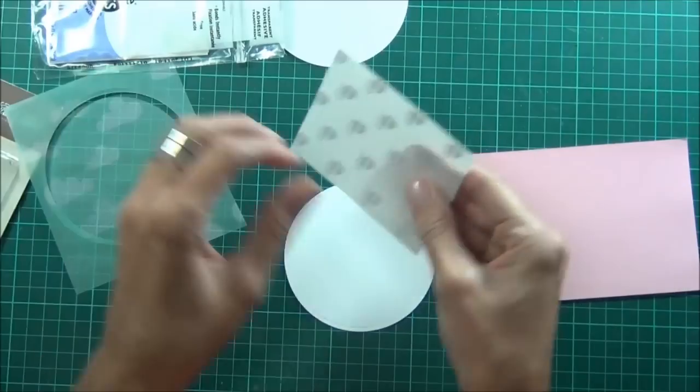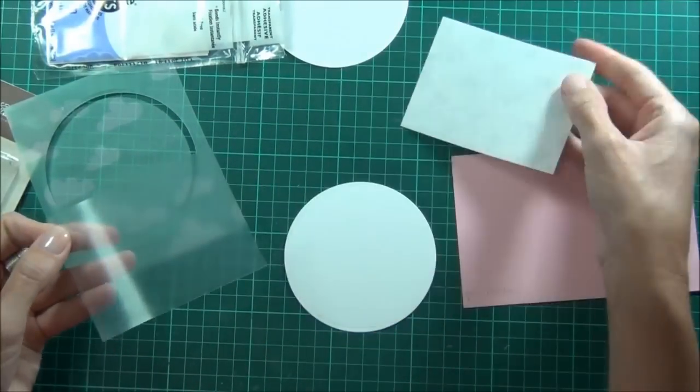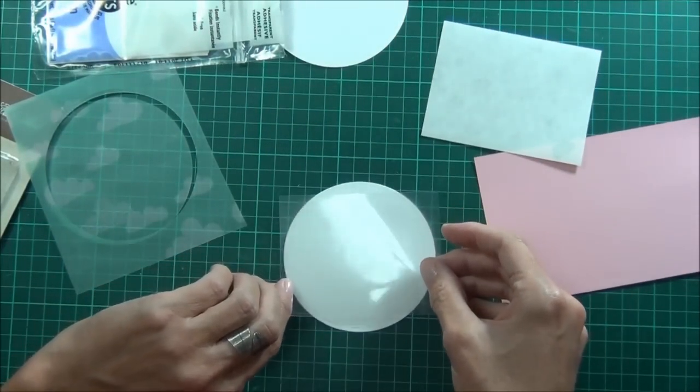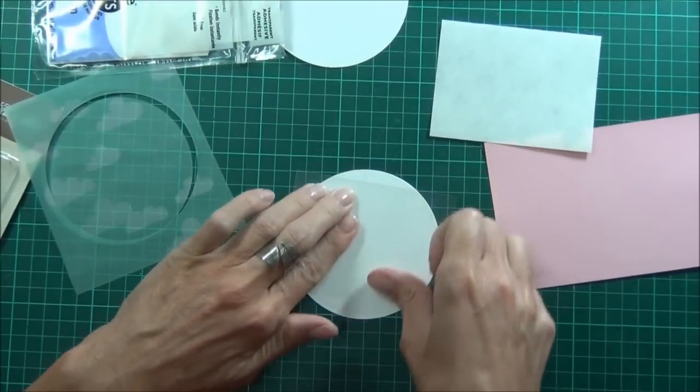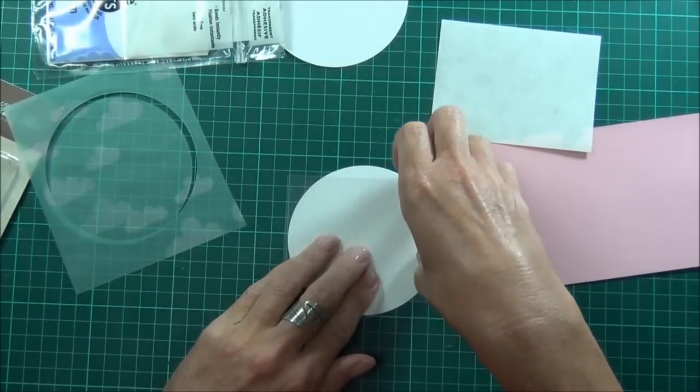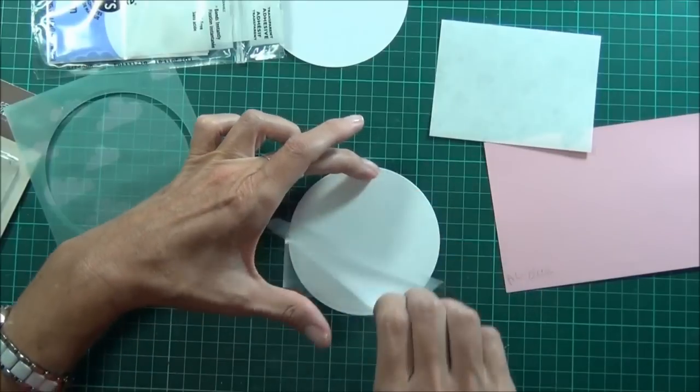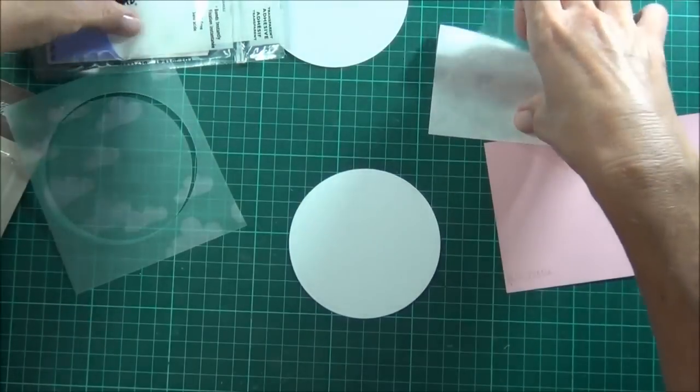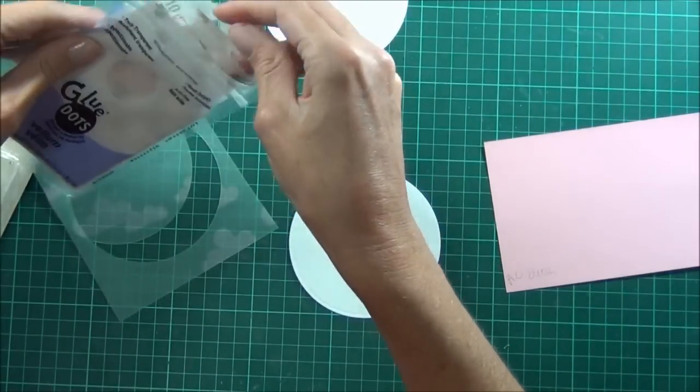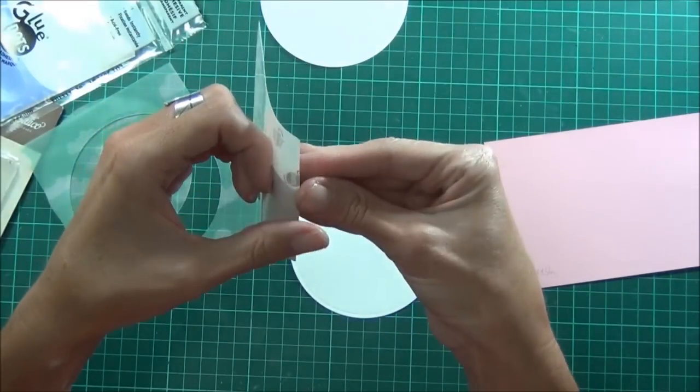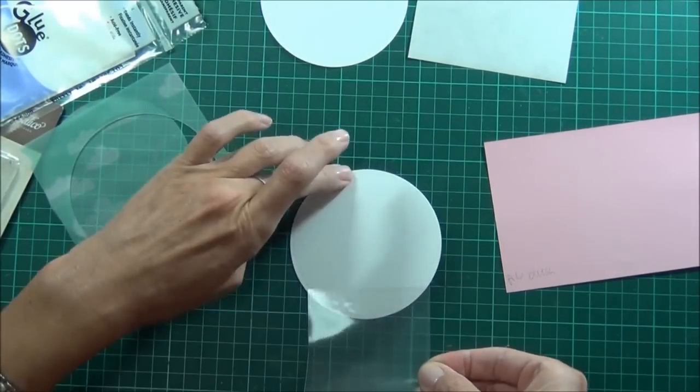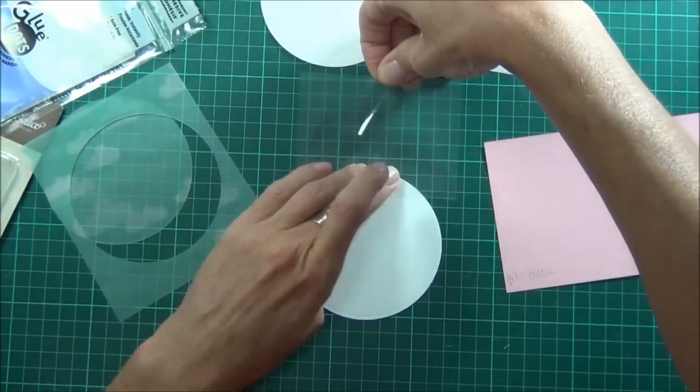I've got some glue dots vellum adhesive. This is great because you actually don't see this. A lot of the vellum adhesives that you use are visible. So this one's actually not. Let's use a little bit more on the edges here. At the top.